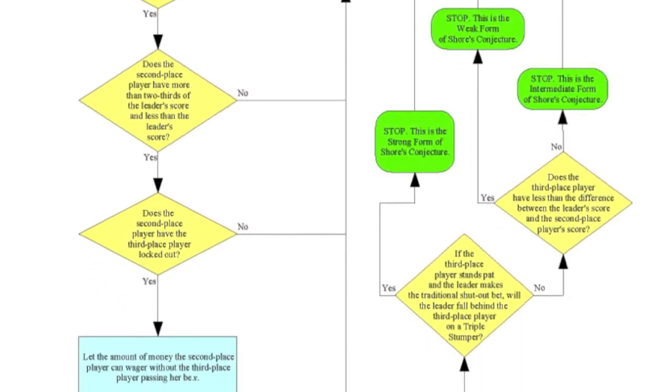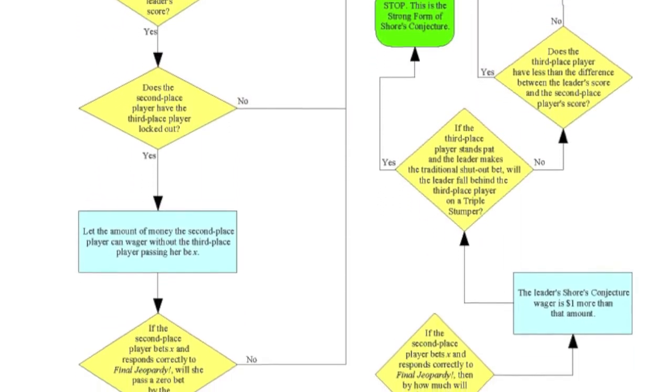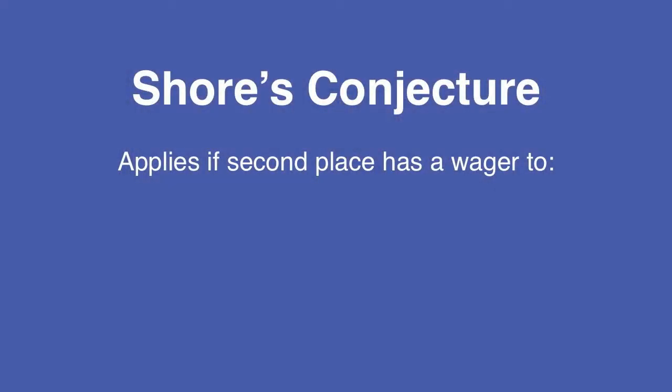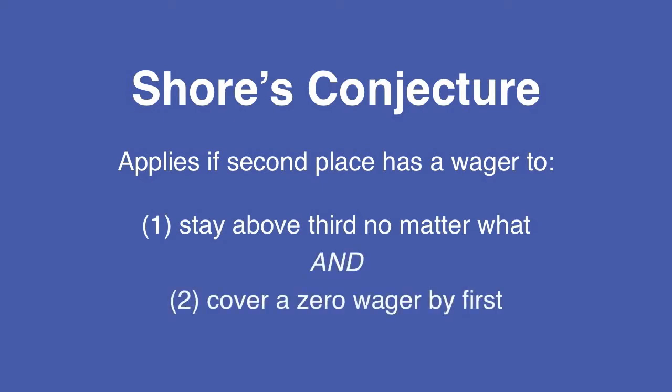and it's one of the most misunderstood mind game scenarios in wagering. Andy Saunders of the Jeopardy fan put together a big flowchart to outline the possibilities and what happens. Using my rules, we're going to narrow it down to just two criteria. It all relates to second place. Can second place wager so that he can stay above a double up by third and cover a zero wager by the leader?